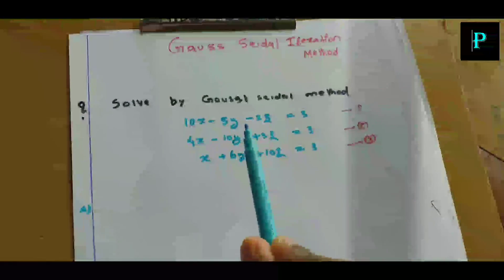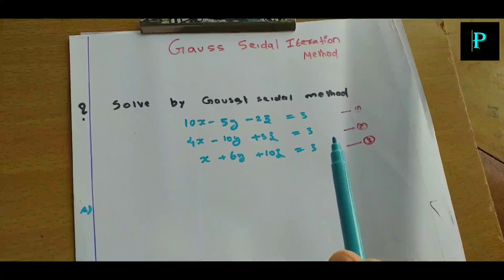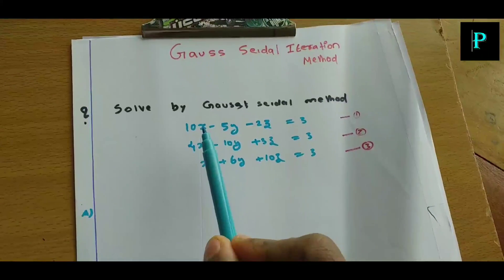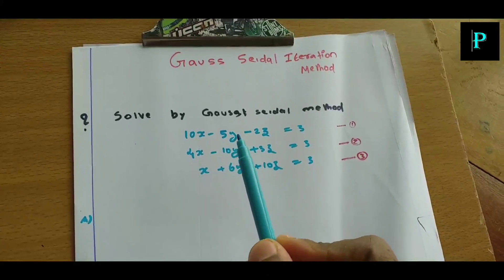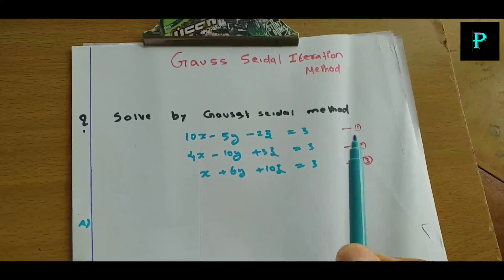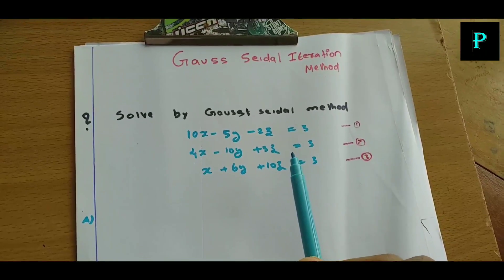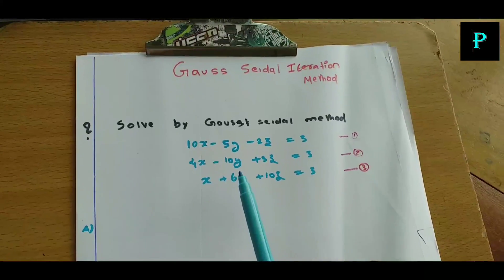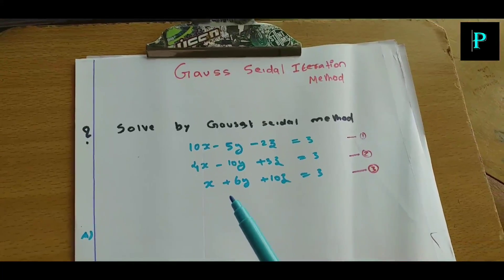We are going to take X into the equation, Y into the equation, and Z into the equation. Suppose 1X is equal to 5Y plus 2Z plus 3, divided by 10. Y is equal to 3Z minus 4X, divided by 10.